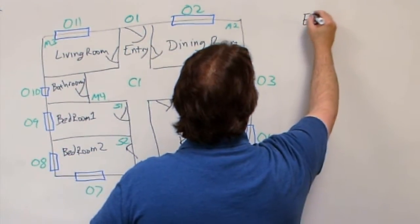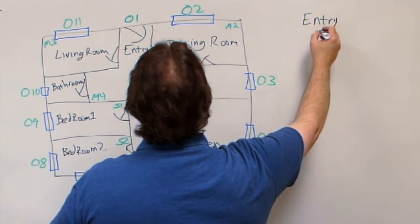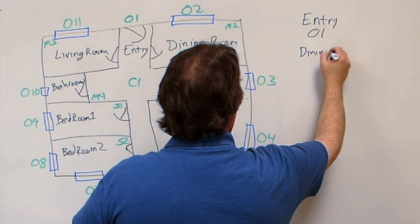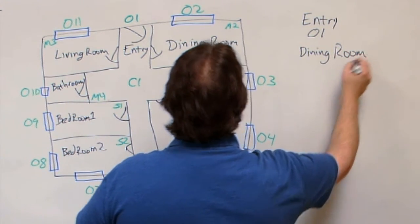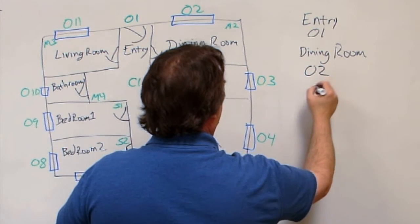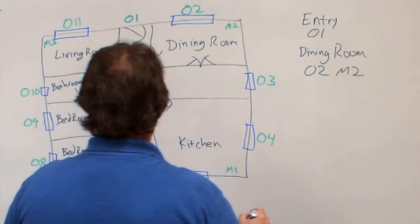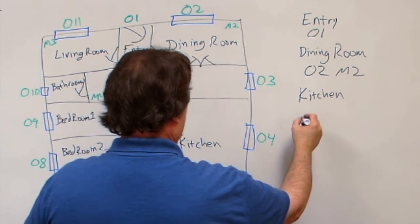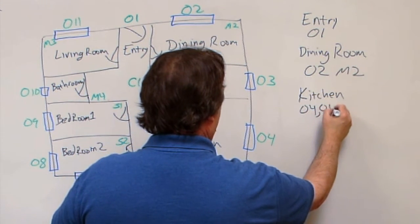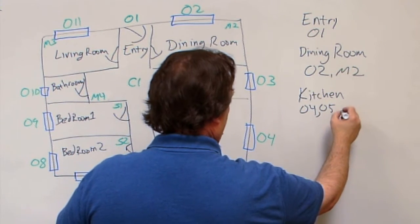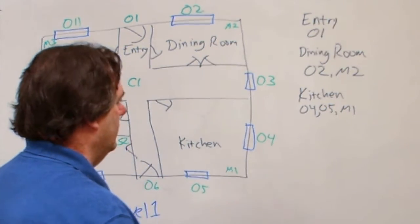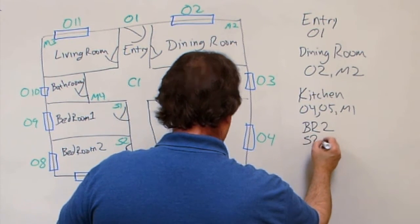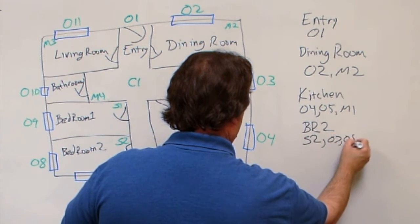We'll start with the entry. That has O1. And then the dining room, that has O2 and M2. The kitchen has O4, O5, and M1. Bedroom two has S2, O7, and O8. And so on.